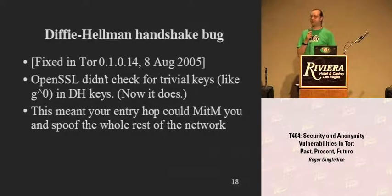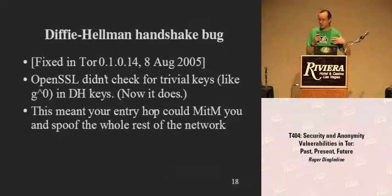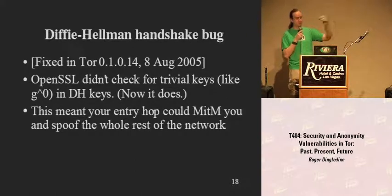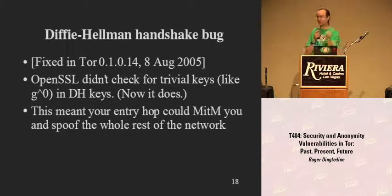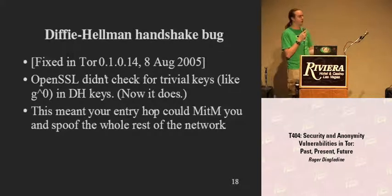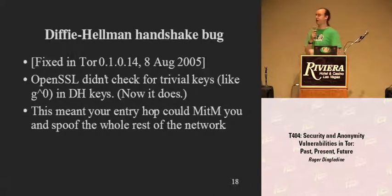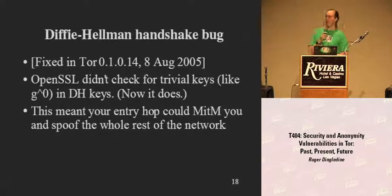It turns out that OpenSSL doesn't check keys as much as we thought. So if somebody does a man-in-the-middle attack — for example, they are your first relay — they accept the connection and pass it on but change the keys so they can read everything going back and forth. In fact, they don't just have to read everything; they can pretend to be the whole rest of the network, imitate anything they want. You're basically talking in plain text. We had no idea this bug was around.